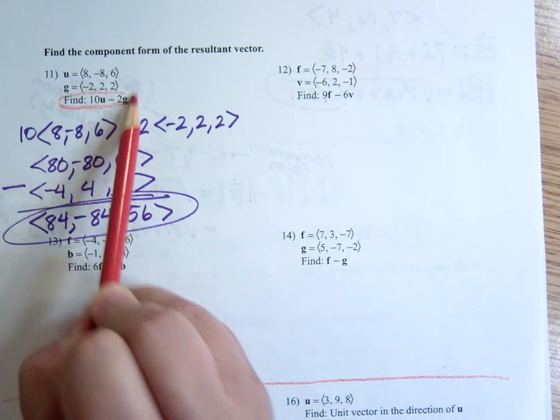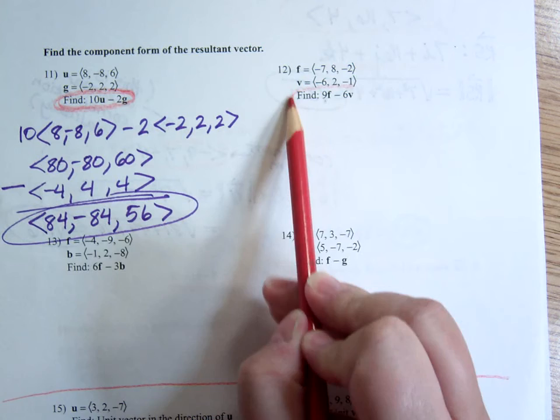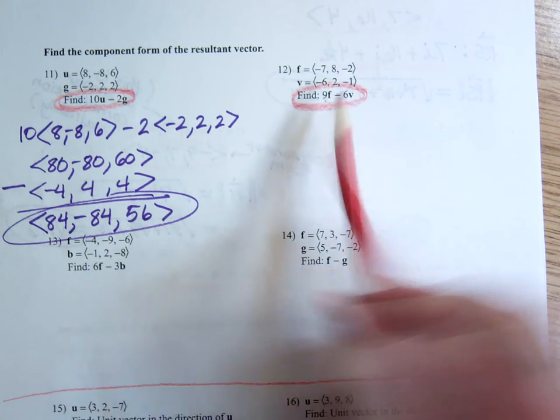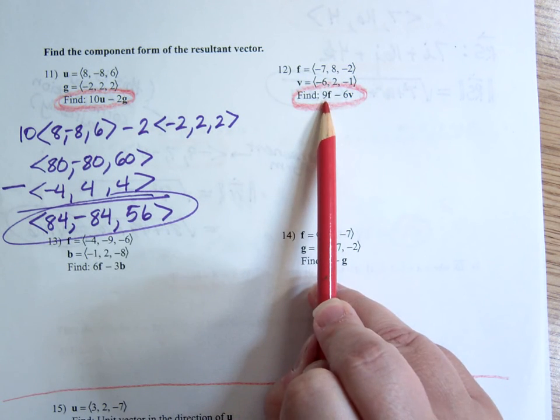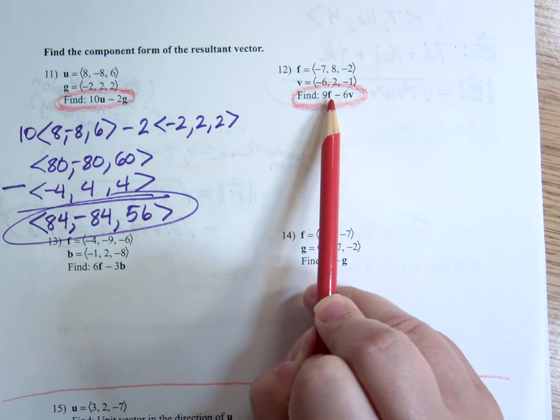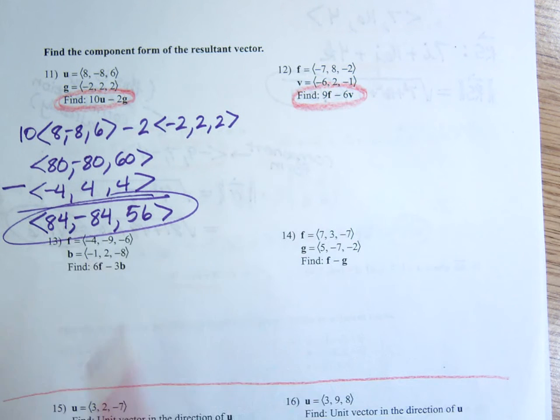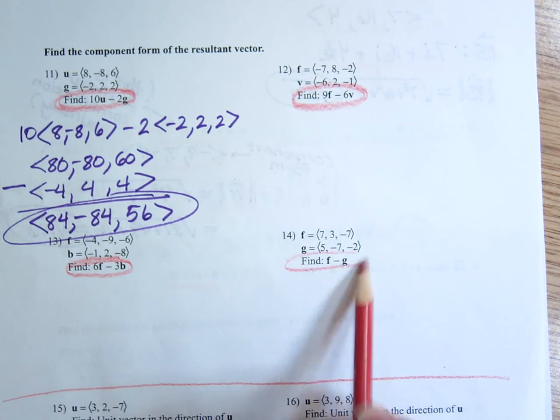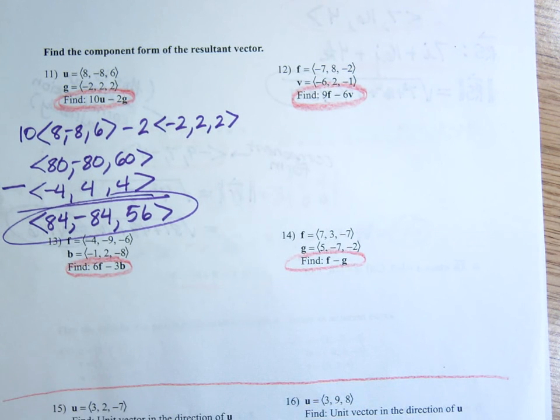So this is what they're saying. Find this. It's just the same way we would do it with matrices. So this is a scalar multiple, 9 times vector F minus 6 times vector V. So that's what you're doing. Don't let the word resultant mess you up.